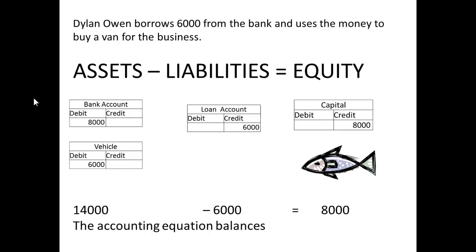Now Dylan borrows £6,000 from the bank and uses the money to buy a van for the business. Borrowing money from a bank is a liability, so we credit a loan account — which is a liability account — with £6,000. We add a vehicle, which is another asset, so we debit the vehicle account with £6,000.